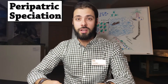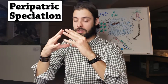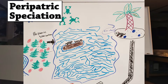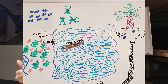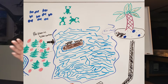Peripatric speciation is when a subpopulation of a much larger population breaks off and forms a new species due to a physical barrier. So as with allopatric speciation, a physical barrier is at play preventing the genetic exchange of material between the two populations. But the difference is that in peripatric speciation, the new species is comprised of far fewer individuals.